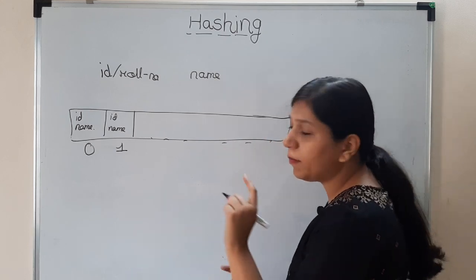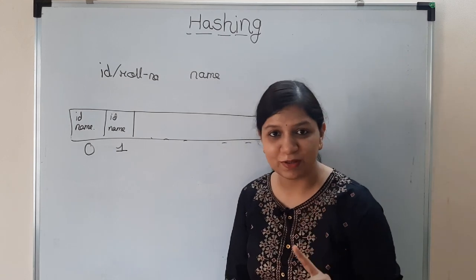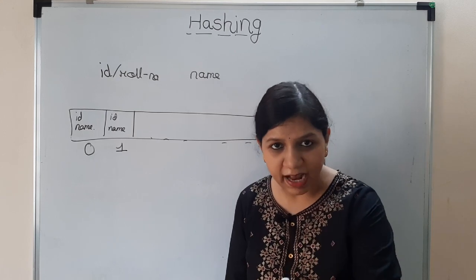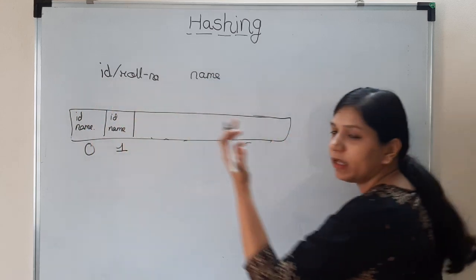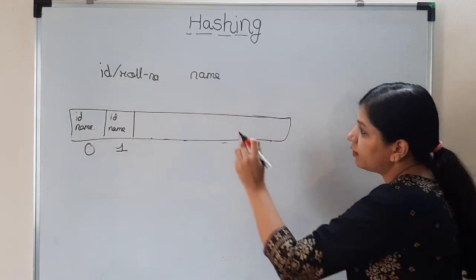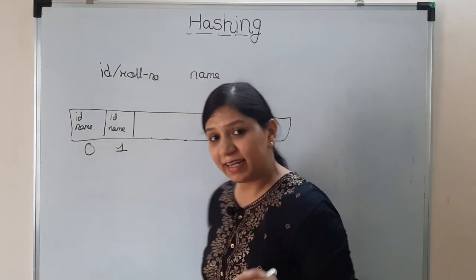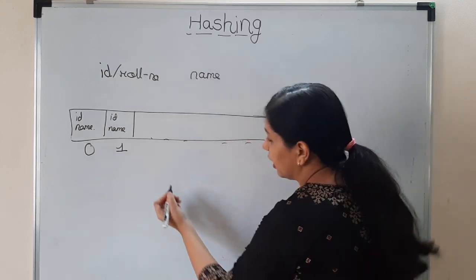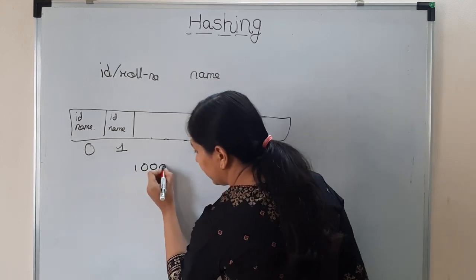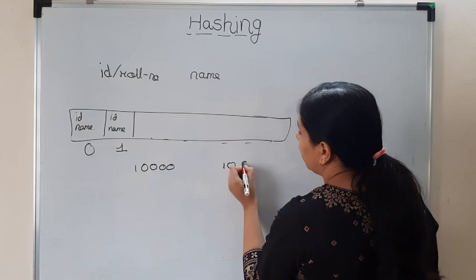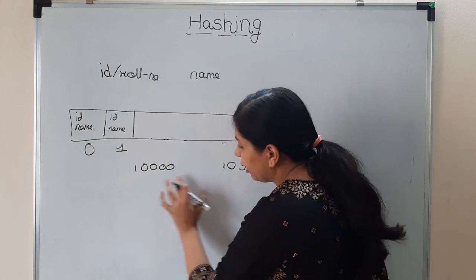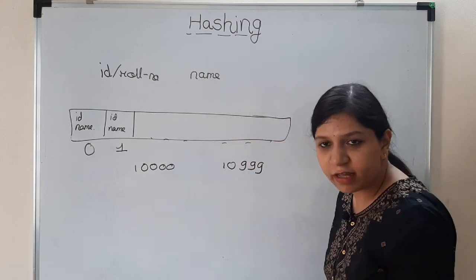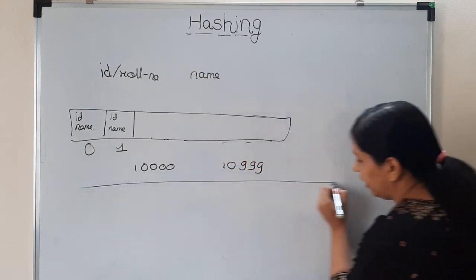One thing you can do is you can create an array and you can put ID and name at the zeroth index, at first index you put ID and name of second student, and so on, right? Another possible thing that you can do, which is hashing: this ID, it is going to be an integer. This number you can use as an index.